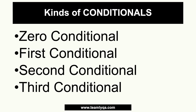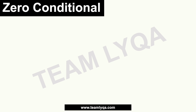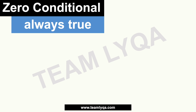You can think of it as levels of likelihood that something will be true. We'll start with the zero conditional. We use it if something is always true — if it's a fact, if it's a habit. It's always true, 100% of the time it's going to happen. Zero doubt — it's always true.